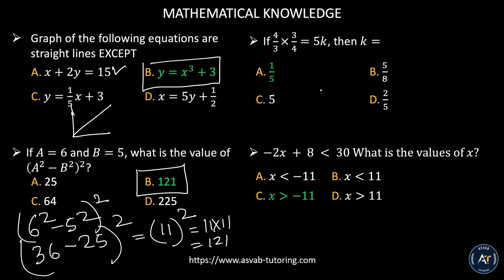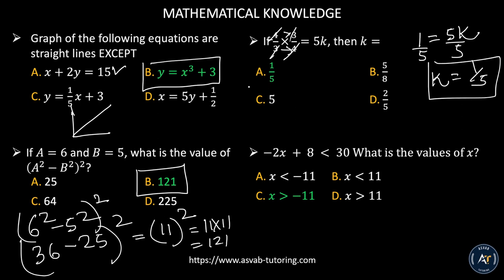If 4 over 3 times 3 over 4 equals 5k, then what is k? Multiply the fractions — they cancel out to give 1, so 1 equals 5k. Divide both sides by 5: k equals 1 fifth. The correct answer is letter A.